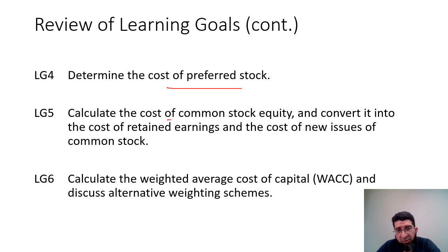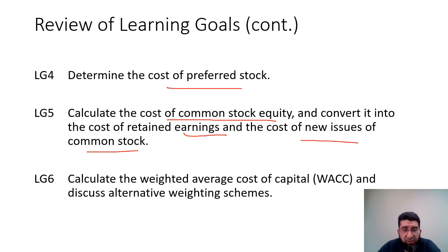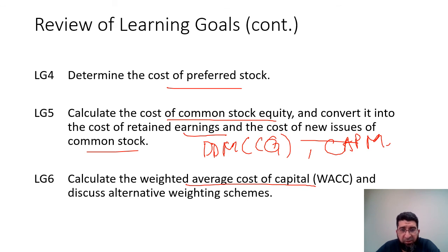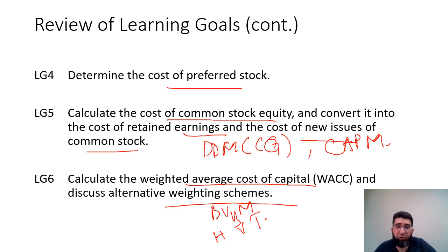To summarize what we've learned in this session: we looked at the cost of preferred stock and calculated it; we looked at the cost of common stock equity using the dividend discount model with constant growth and the Capital Asset Pricing Model, including differences and challenges; we converted common stock cost into the cost of retained earnings and new common stock issues; and finally we calculated the Weighted Average Cost of Capital and discussed alternative weighting schemes such as book value versus market value and historical versus target proportions.